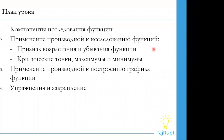Так как мы уже знаем, как вычислить производную, теперь мы применим наши знания о производной к исследованию функций. Мы изучим два признака: признак возрастания и убывания функций и точки максимума и минимума. Последнее — применение производных к построению графика функций. И в конце мы, благодаря нашим исследованиям, начнем строить график функций.